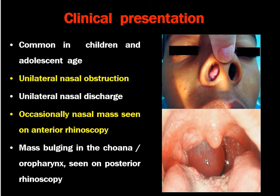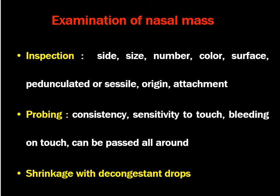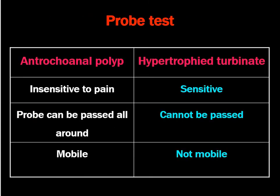The mass bulging in the choana or pharynx is seen on post-rhinoscopy or on examination of the oral cavity - this is the important finding. The mass of the antrochoanal polyp goes towards the oropharynx and can be seen hanging from the nasopharynx to the oropharynx. The mass can also be visualized in the nasal cavity. How to examine the nasal mass: we have to inspect the size, number, colour, surface, and origin. If we can see an attachment, probing is important to find out the consistency, sensitivity to touch, and bleeding on touch.